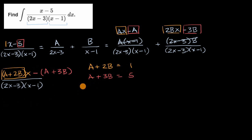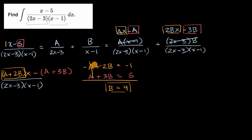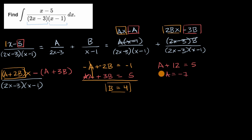To solve for A and B, we use elimination. Multiply the first equation by negative one: negative A minus two B equals negative one. Adding that to the second equation cancels the A's, leaving negative two B plus three B equals four, so B equals four. Substituting back: A plus three times four equals five, so A plus 12 equals five, giving A equals negative seven.